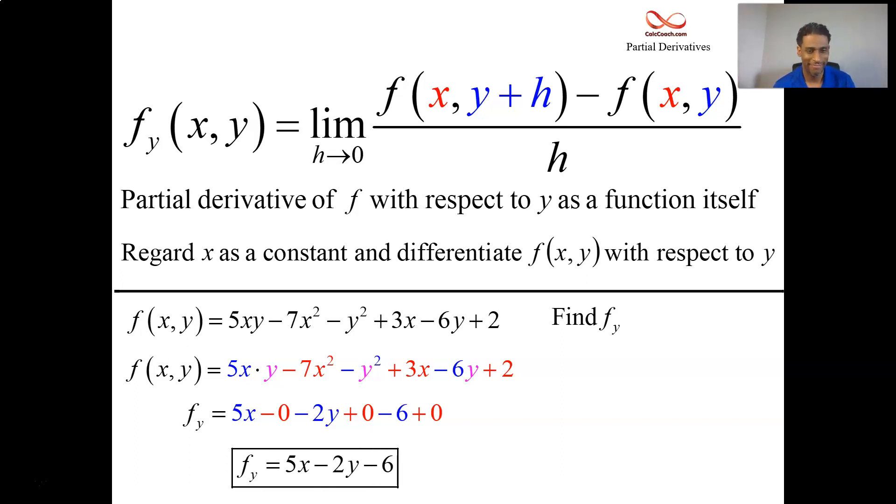There's your partial derivative. That was pretty straightforward. Now let's look at some more difficult ones. Our next function is going to be arctan of y over x, and we want to take the x partial.